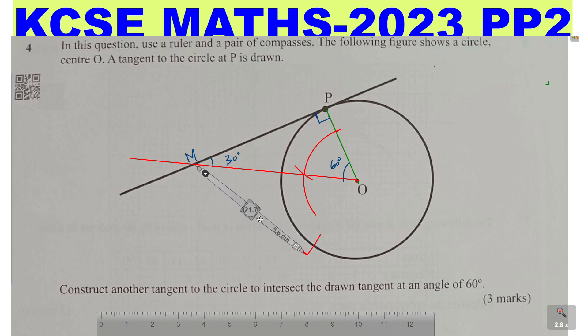So just mark that point. And then you just need to draw a straight line from this point here, from M, to this point we've made an arc there. So from there you just draw a tangent like that. And that is how you go about that.